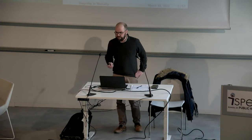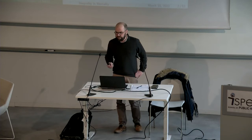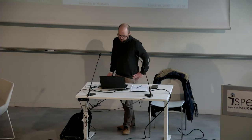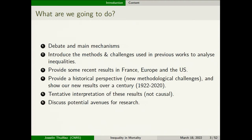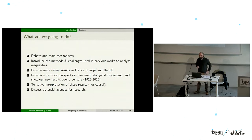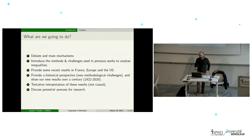The income-mortality gradient is of broad interest — not only in France but also in the US. Probably one of the most known contributions is from Angus Deaton, Nobel Prize in economics, who published a paper in 2003 in the Journal of Economic Literature summarizing this literature. Today I will briefly present the debate and main mechanisms linking income inequality and mortality, introduce the methods, provide recent results from France and the US, give a historical perspective, and discuss avenues for research.